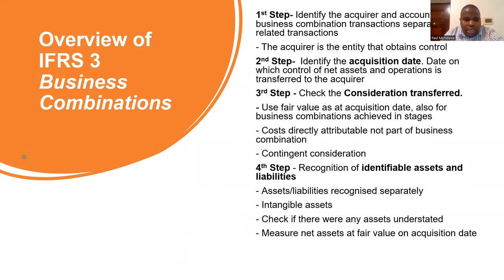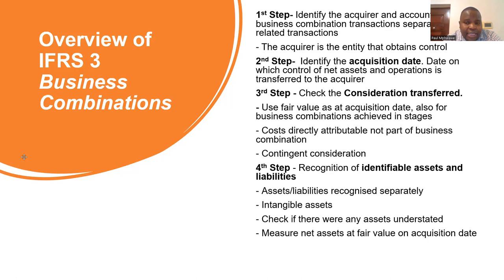In understanding the standard IFRS 3, there are things that we need to put into consideration — the steps that we need to understand. Whenever there is a business combination, we should first of all identify the acquirer and account for business combination transactions separately from related transactions.